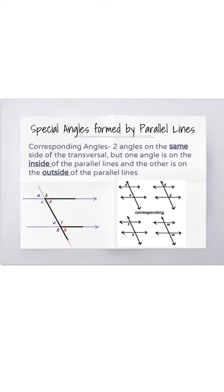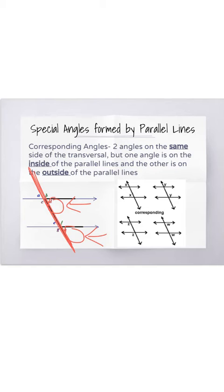Corresponding angles are two angles on the same side of the transversal, but one angle is on the inside of the parallel lines and the other is on the outside. You can see that angle D and angle H are on the same side of this transversal line, but one is inside the parallel lines and one is outside — that makes them corresponding angles. You can also see that angle A and angle E are on the same side of the transversal, but one is inside and one is outside, so angles A and E are corresponding angles.